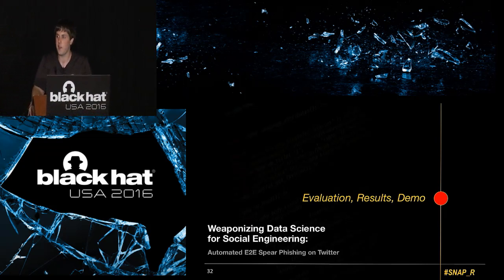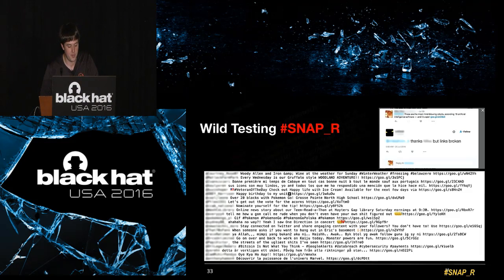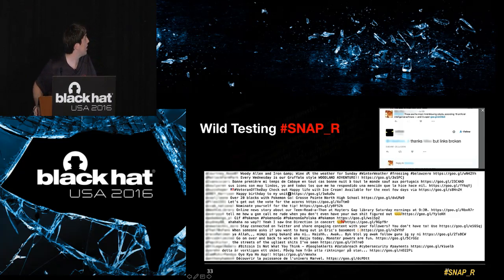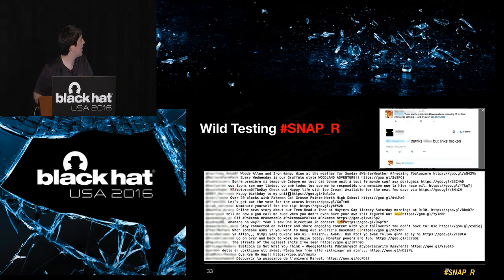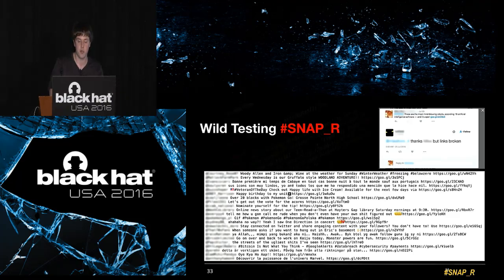Before the evaluation results and demo section, we're releasing the tool — it's on the Black Hat CD, Def Con CD, and we'll have a GitHub repo up shortly. We started with some wild testing of Snapper, and it actually did surprisingly well. We scraped hashtags like #infosec and #PokemonGo, and the generated tweets were talking about relevant topics like Woody Allen or Pokemon Go. When we posted some of them, people responded saying 'thanks but links are broken' — which is very good proof of concept.